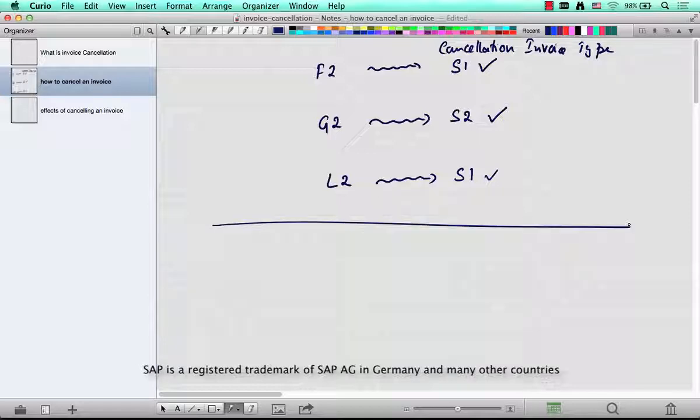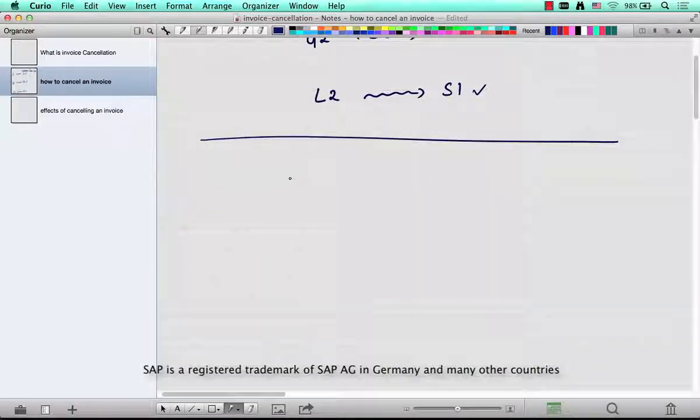The way to cancel an invoice is, let's say there's a sales order, delivery, and then there is an invoice 90001, and it's posted to accounts. The way to cancel that invoice is, go to transaction VF11, that's the transaction code, VF11.